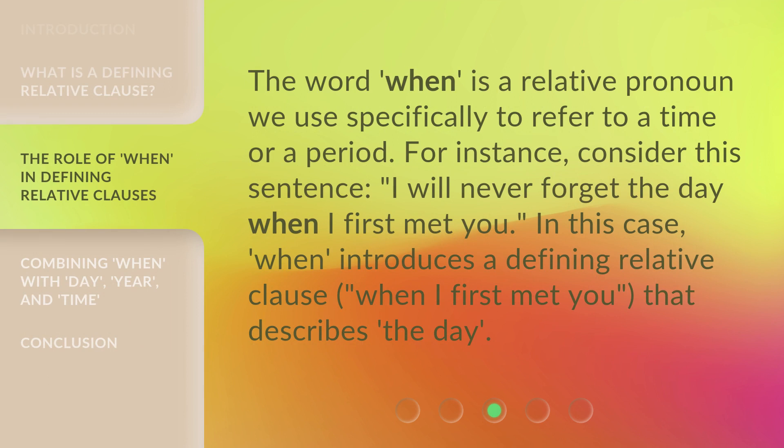The word 'when' is a relative pronoun we use specifically to refer to a time or a period. For instance, consider this sentence: 'I will never forget the day when I first met you.' In this case, 'when' introduces a defining relative clause — 'when I first met you' — that describes the day.